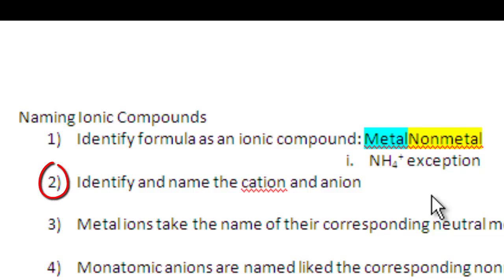Next, identify and name the cation and the anion. The cation is the positively charged component of the formula and the anion is the negatively charged component of the formula.